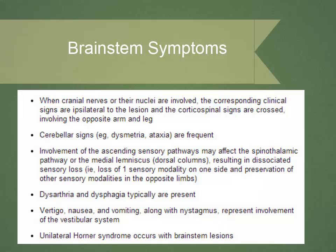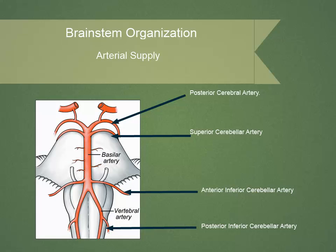If you see these recognizable signs, you'll have a very high index of suspicion that one is dealing with a brainstem problem. Since many brainstem lesions are vascular, it's handy to know the basic vascular supply. Coming from the vertebral-basilar system, first branches off the vertebrals are the posterior inferior cerebellar arteries (PICA), then as the basilar is formed the anterior inferior cerebellar artery (AICA) is seen, then near the termination the superior cerebellar arteries, and ultimately the bifurcation of the basilar into the two posterior cerebral arteries.